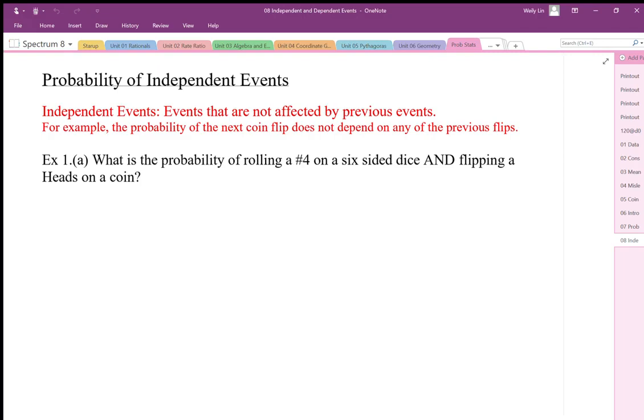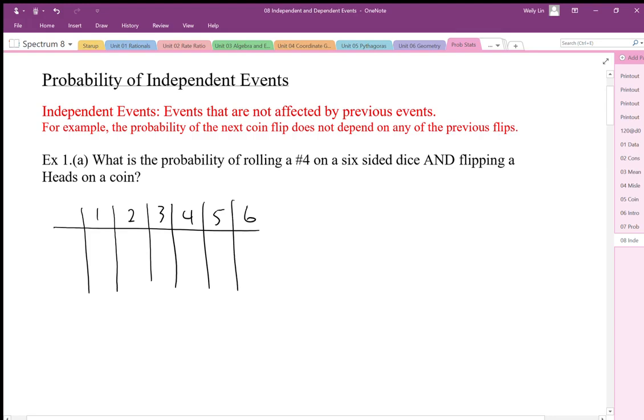So we have one, two, three, four, five, six as possibilities for a dice roll, and for our coin flip we can have heads or tails.